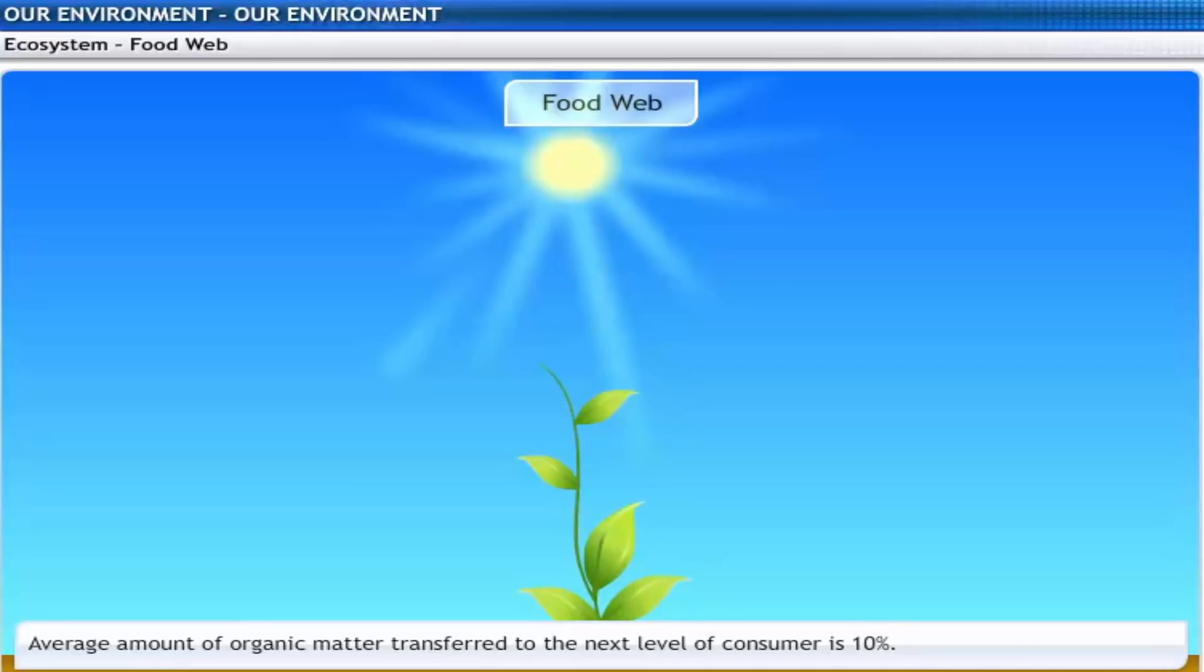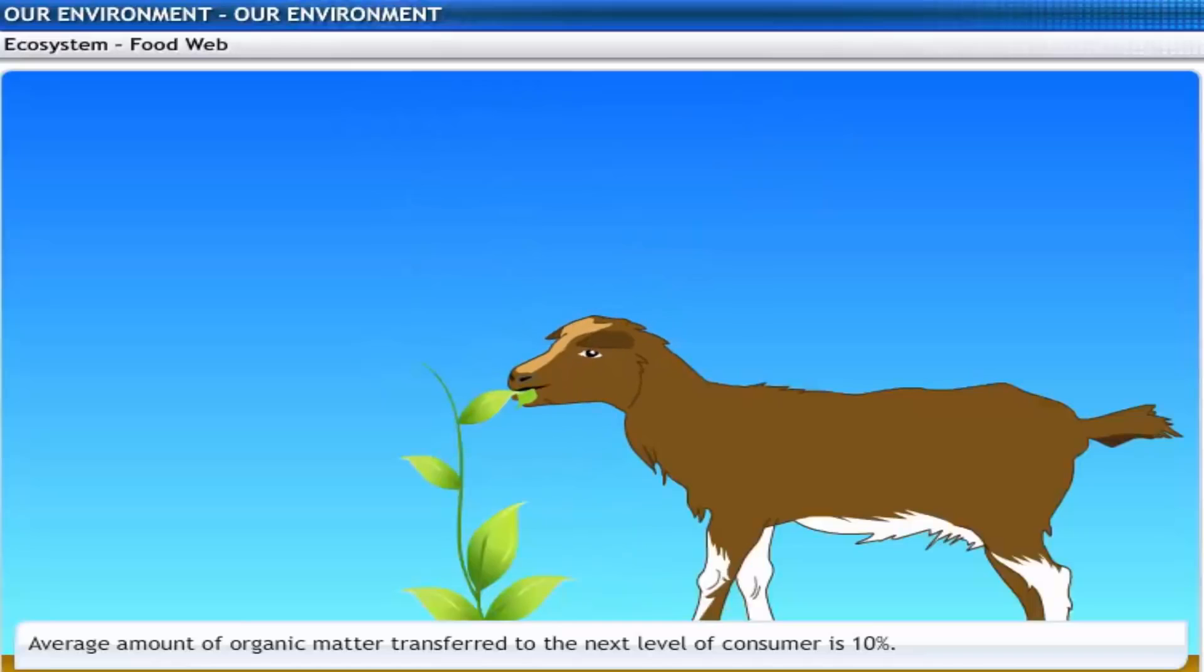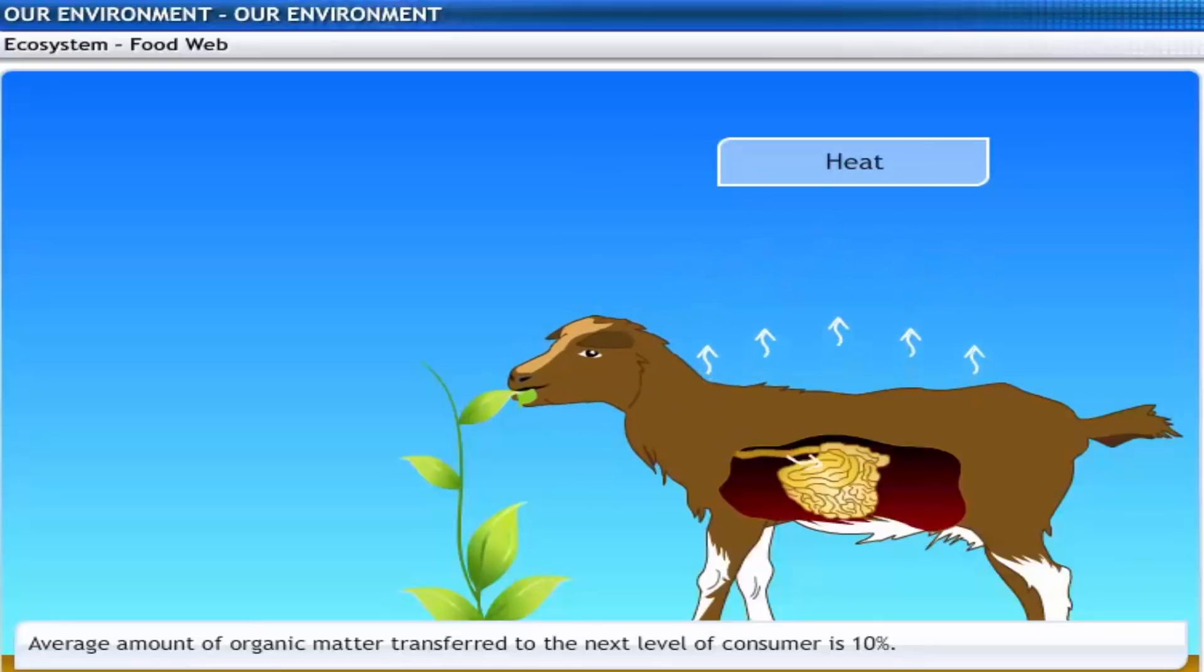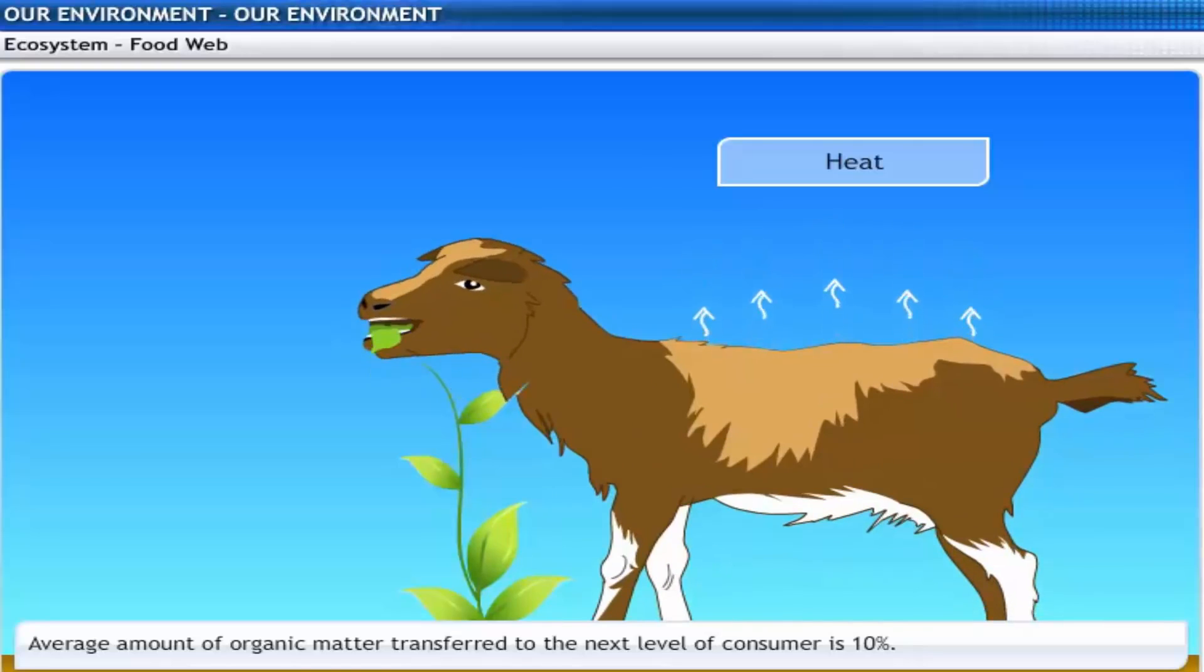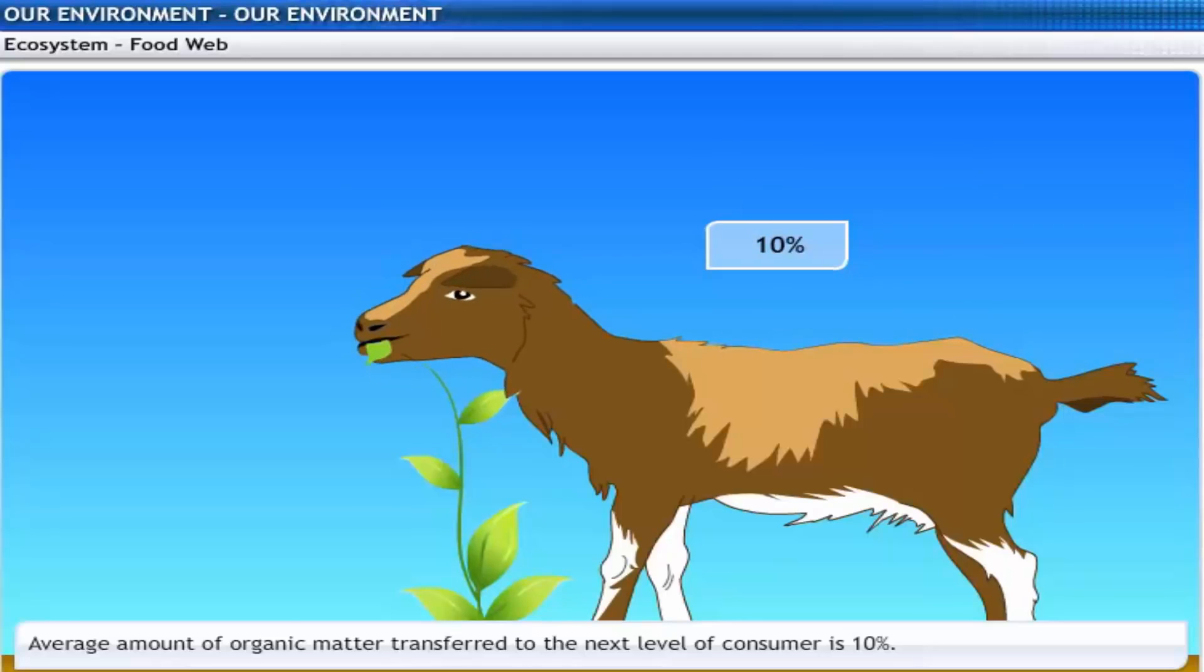When these green plants are eaten by primary consumers, a great deal of energy is lost as heat to the environment. Some amount goes into digestion and in work, and the rest goes towards growth and reproduction. An average of 10% of the food eaten is turned into its own body and made available for the next level of consumers. Therefore, 10% can be taken as the average value for the amount of organic matter that reaches the next level of consumers.